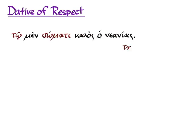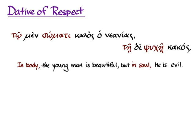You can use a noun in the dative to limit the area for which a statement is true — to indicate the respect in which something is true. For example: 'in body, in respect to the body, the young man is beautiful, but in soul, in respect to that part of things, he is evil.' You'll see this a lot in men...de sentences where Greek is happy to make a distinction and specify exactly where the turning point is. Add dative of respect to your list of things the dative can do, and when other uses don't make sense, try this one — especially when you have a parallel structure in which the author is making a specific point about a contrast.